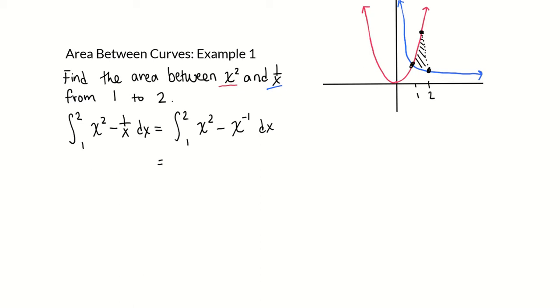Now the integral of x squared is x to the third over 3. The integral of x to the negative 1 is ln of x, so minus ln of x. And we're evaluating from 1 to 2.